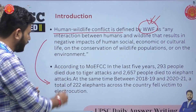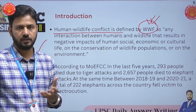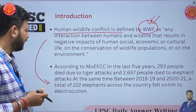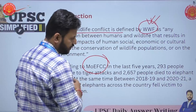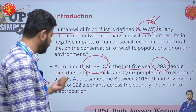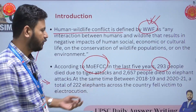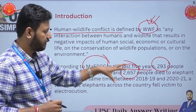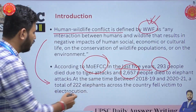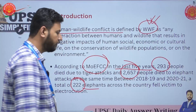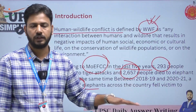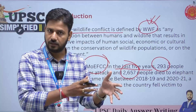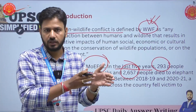Along with this definition, you will also have to give some official numbers from India which suggest that human-wildlife conflict is increasing day by day. According to the Ministry of Environment, Forest and Climate Change, in the last five years, 293 people have died due to tiger attacks and nearly 2,657 people have died due to elephant attacks. At the same time, between 2018 and 2021, almost 222 elephants also fell victim to this conflict. Though human-wildlife conflict is not restricted only to tigers and elephants, this is the most major chunk of this conflict.